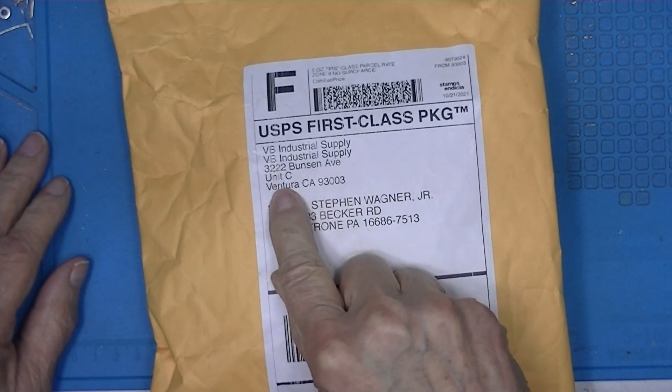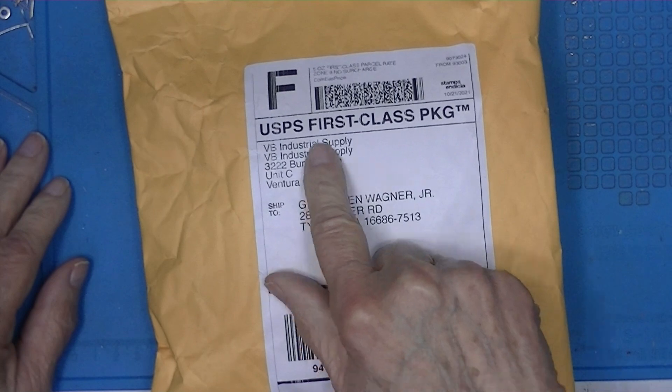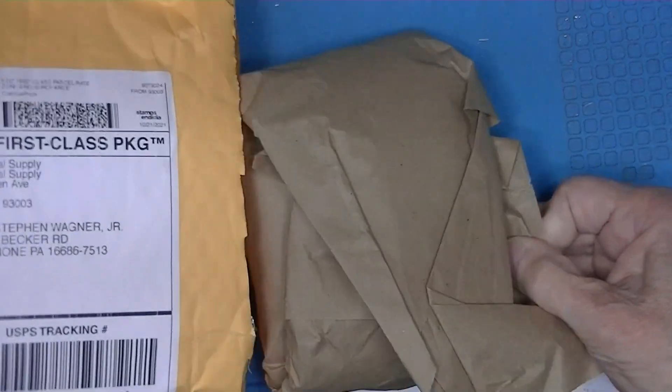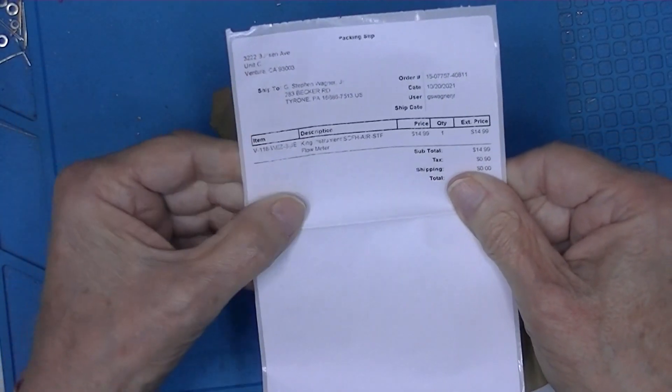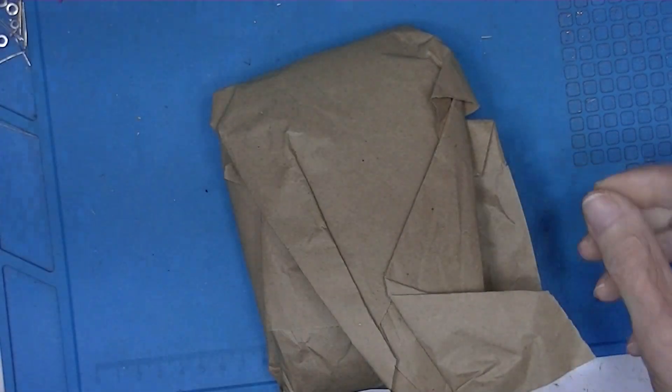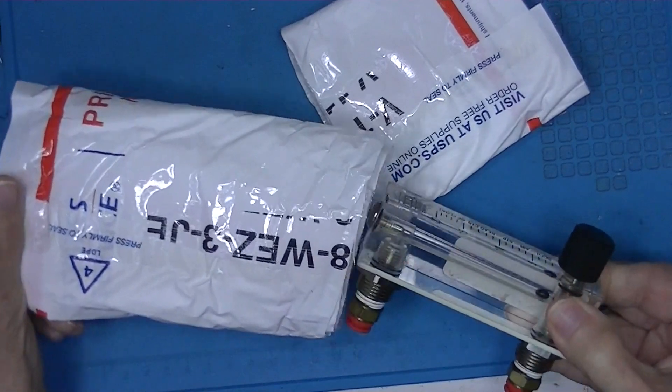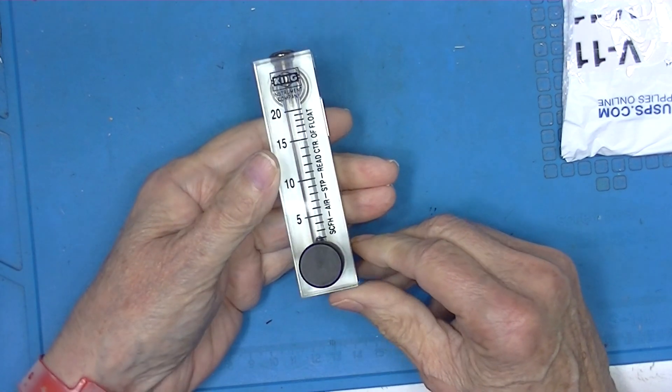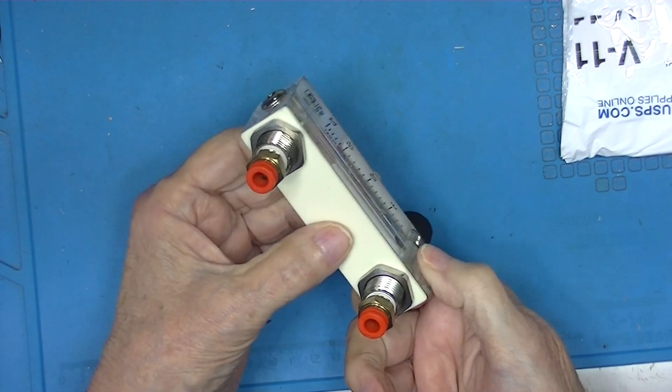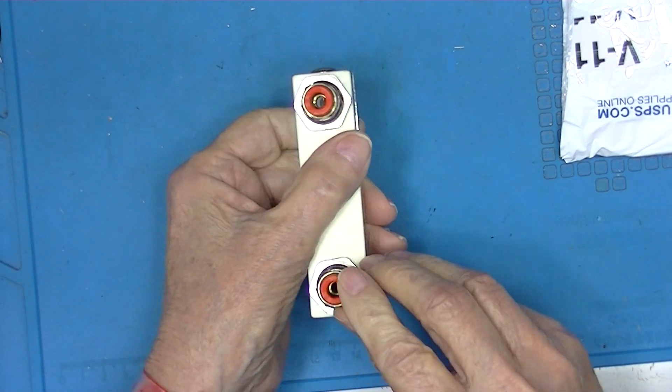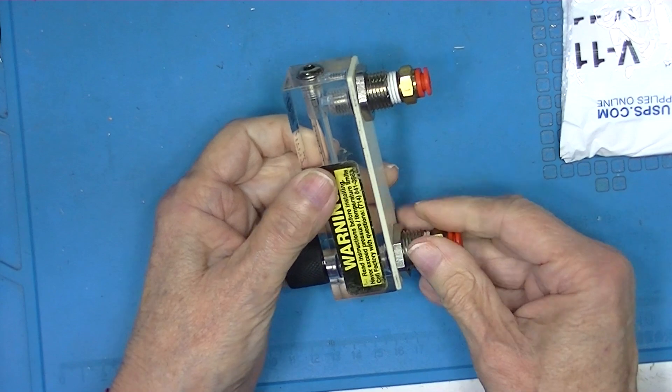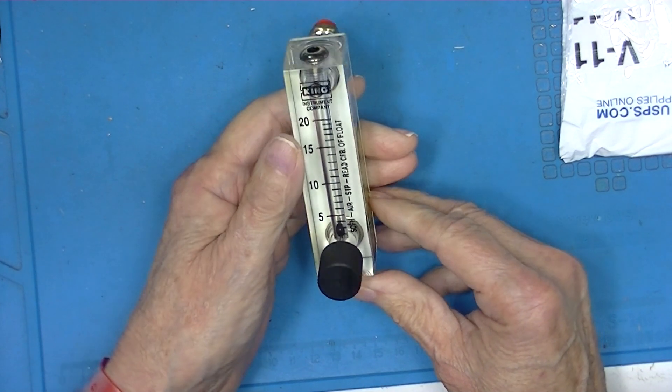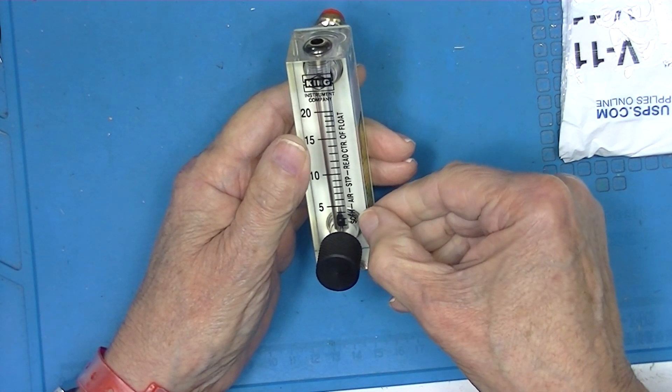This is something from a domestic source, probably via eBay. It's a variable area flow meter with quarter-inch quick disconnects on it, and it's calibrated from zero to twenty standard cubic feet an hour.